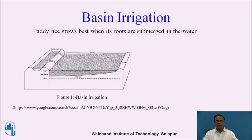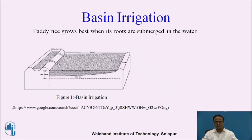In a typical sketch of basin irrigation, water is taken from the field channel into the field, which is bounded by an embankment or bund. When water enters and settles into the soil mass, it will not get expelled out because of the embankment. This is the most popular method for rice cultivation, and the soil mass is not eroded because of the presence of the embankment.